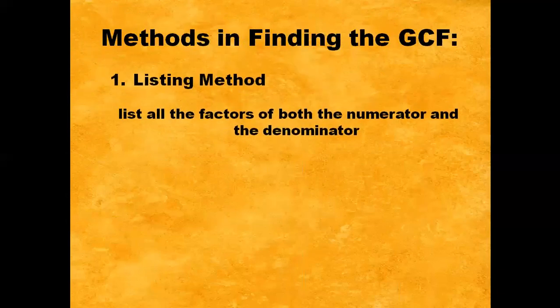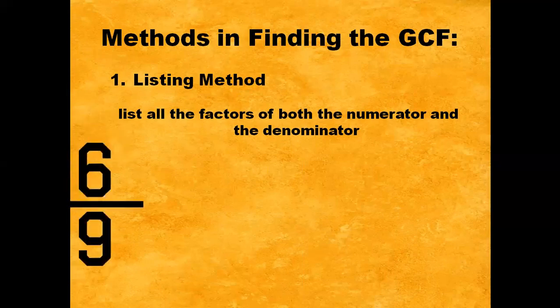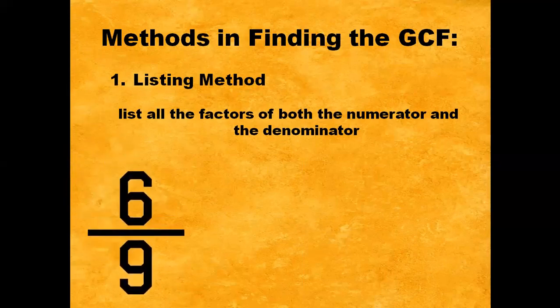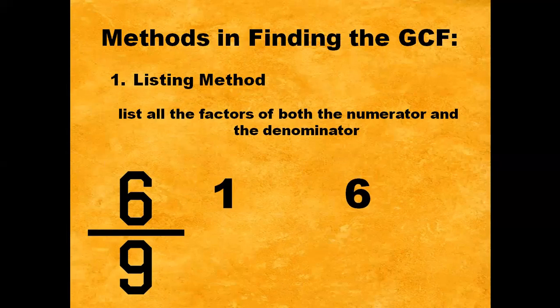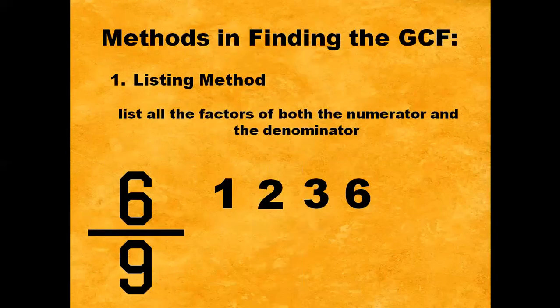Listing method: list all factors of both the numerator and the denominator. For example, six-ninths. What two numbers can we multiply to get a product of six? We can have one times six, and two times three will give us six. So the factors of six are one, two, three, and six.